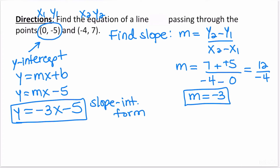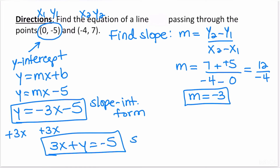To rewrite in standard form, recall the three requirements. No fractions — we're fine. But x is negative (negative 3x), and x and y aren't together. We can fix both at once by adding 3x to both sides, giving 3x plus y equals negative 5. This is the equation written in standard form.